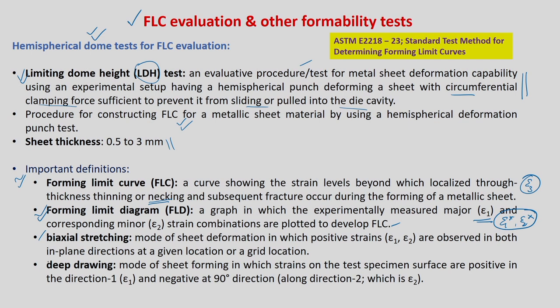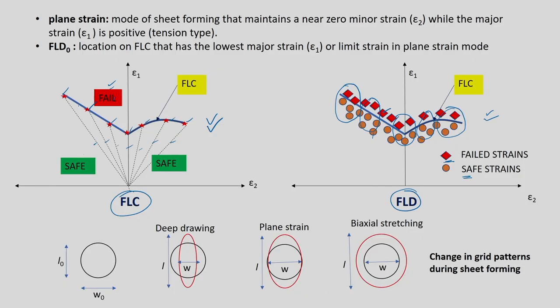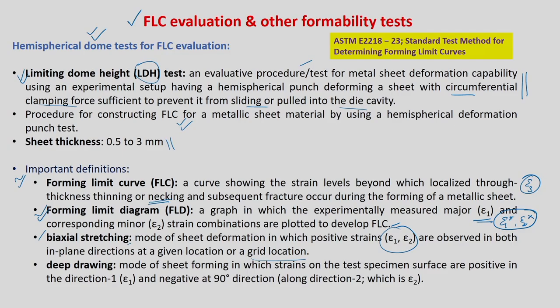There are three important modes of deformation. Biaxial stretching is a mode where positive strains are observed in both in-plane directions at a given grid location — epsilon 1 and epsilon 2 are both positive. One case is balanced biaxial stretching where epsilon 1 and epsilon 2 are equal, giving beta equal to 1, which is the extreme right case on the diagram.